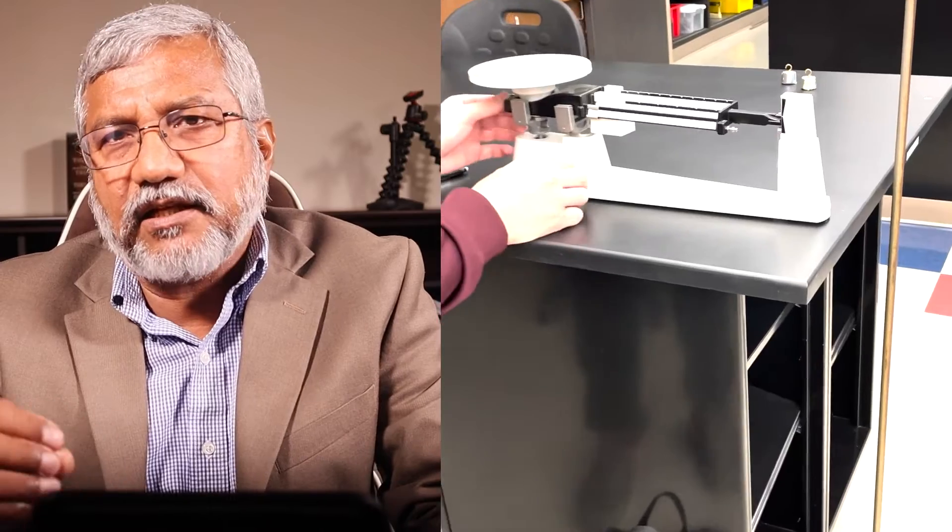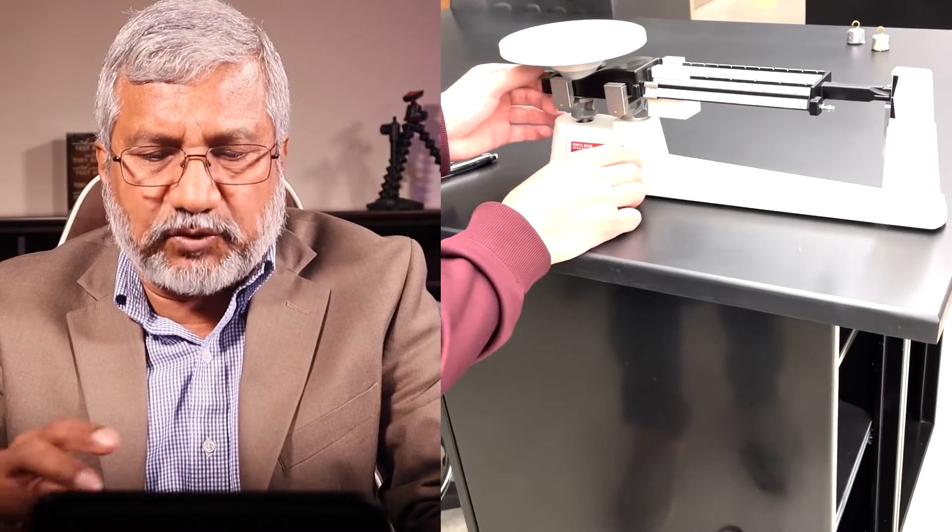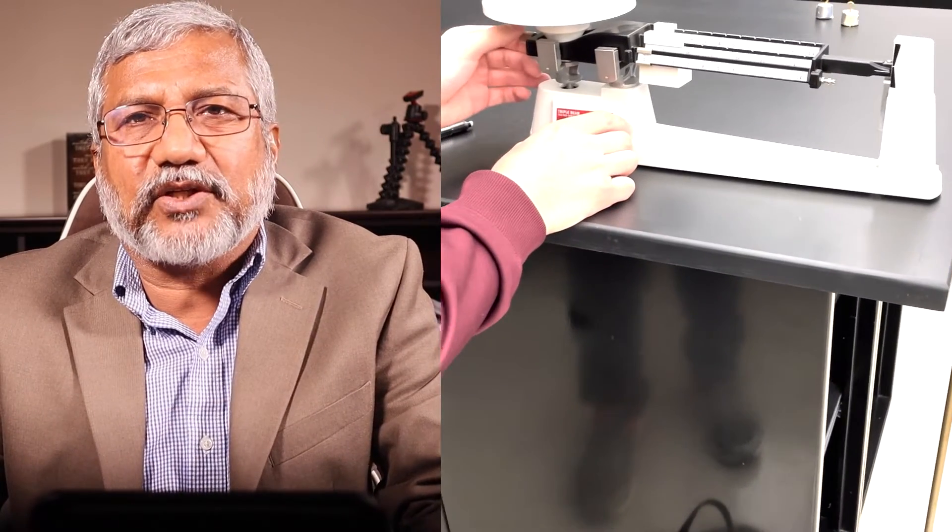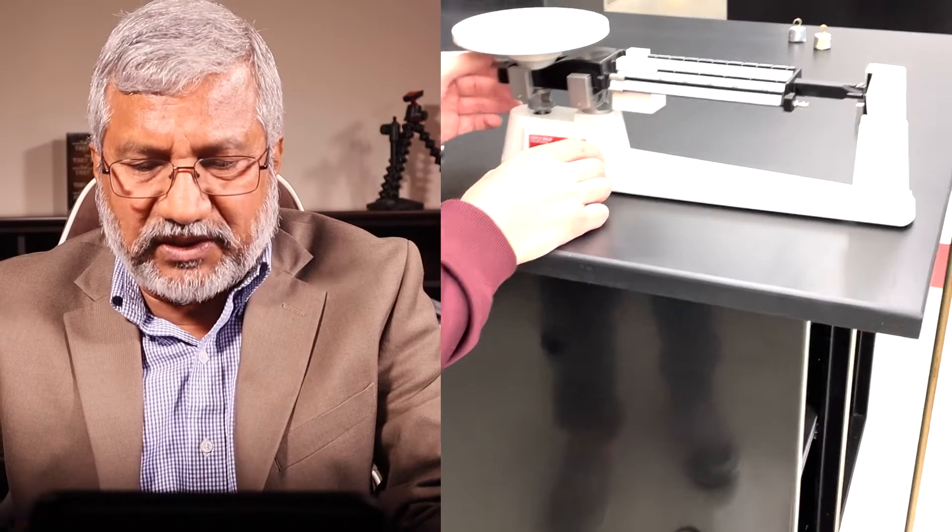Basically, first you got to have a triple scale balance which you have to balance out with no objects on it, so it must show zero with nothing on it, which is what is being shown there.